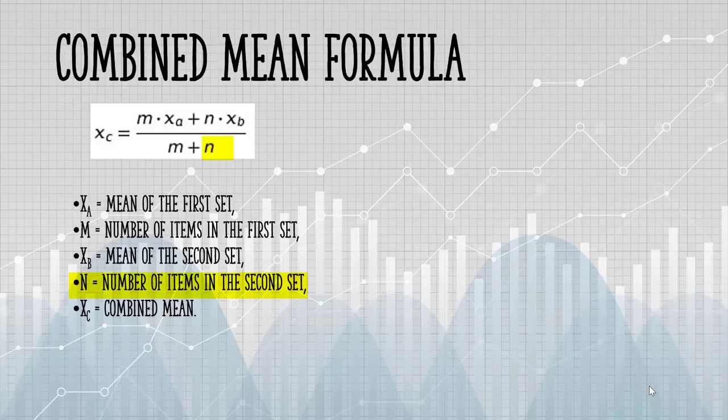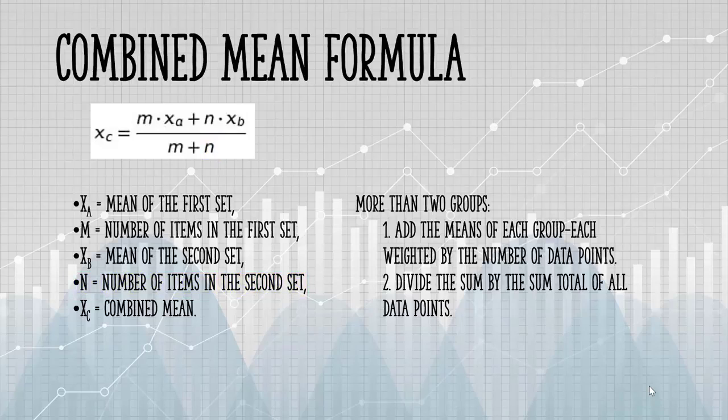For more than two groups, it gets a bit more complicated. You have to add the means of each group, each weighted by the number of individuals or data points, then divide that sum by the sum total of all individuals or data points.